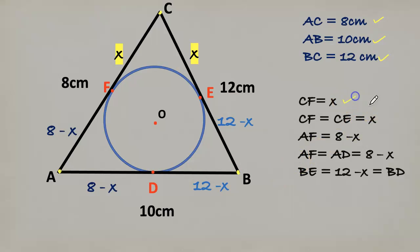So CF is X, CF and CE are equal X, and AF is 8 minus X, then AD also 8 minus X. BE is equal to 12 minus X, equals to BD.